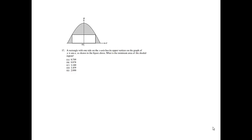Problem 17. A rectangle with one side on the x-axis has its upper vertices on the graph of y equals cosine x, as shown in the figure above. What is the minimum area of the shaded region? In order to get a minimum, I know I'm going to have to find the derivative of the area and set it equal to zero. So we would like to find the shaded region, which we're going to take the area of the entire part and subtract out the area of the rectangle.